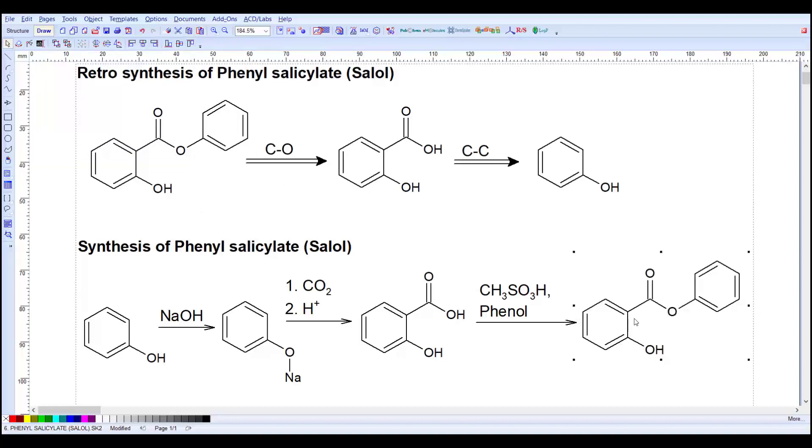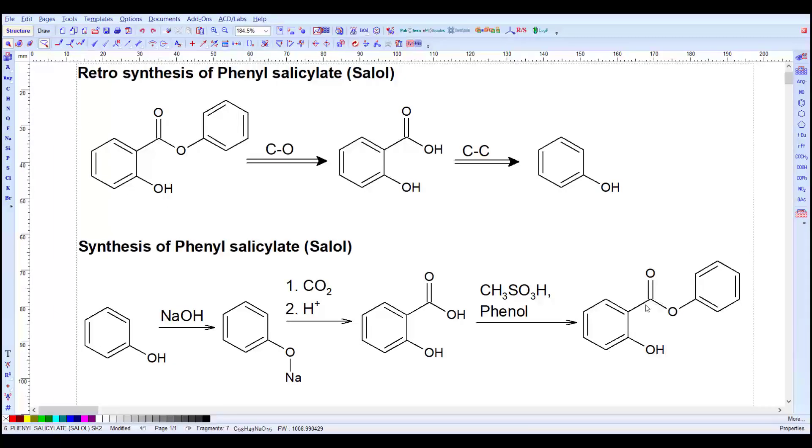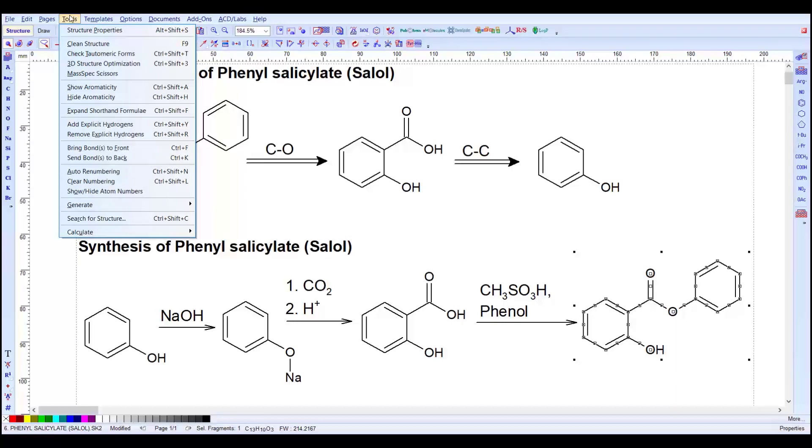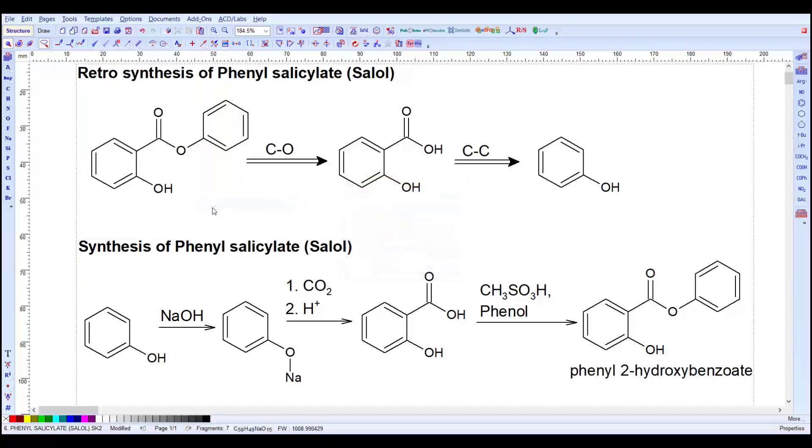Our next task is to generate the IUPAC name of the compound. To get the IUPAC name you have to first select this molecule, hold the molecule, go to the tools option, generate option, name of the structure. It will click just a couple of seconds and you get the IUPAC name. The name is phenyl 2-hydroxybenzoate. The common name is phenyl salicylate and another we can say salol.